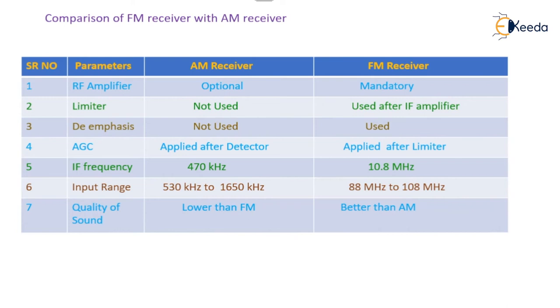Regarding AGC — automatic gain control — in AM receiver it is applied after the detector, whereas in the FM receiver it can be applied after the limiter stage.